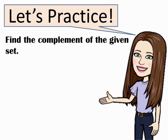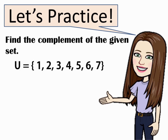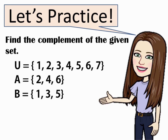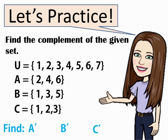Let's have a practice. If U is equal to 1, 2, 3, 4, 5, 6, 7 and A is equal to 2, 4, 6; B is equal to 1, 3, 5; C is equal to 1, 2, 3. Now, we are going to find the A complement, B complement, and C complement. Okay? Let's try.